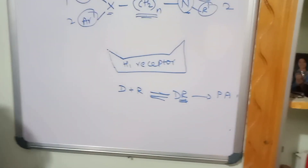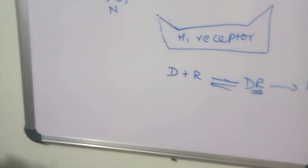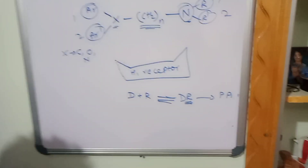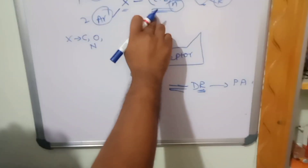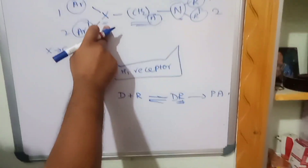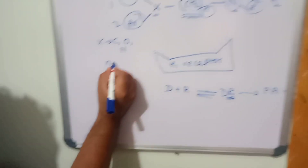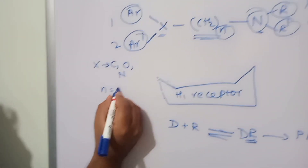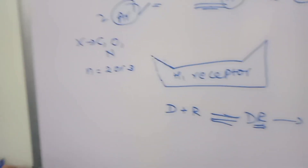When we look at X, it denotes that it may be carbon, oxygen, or nitrogen. No sulfur — if sulfur is placed at the X position, activity decreases. How many carbons are essential to link between the terminal nitrogen and X? Not more than three — mainly two. N denotes the carbon chain, and the carbon chain should not be more than three carbons.